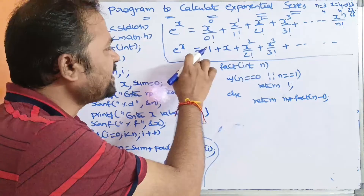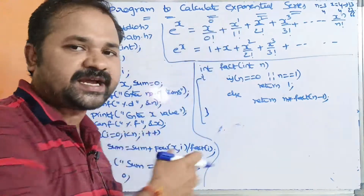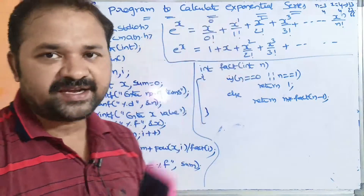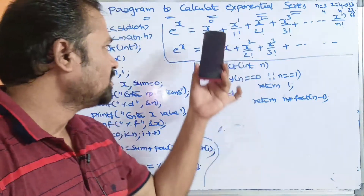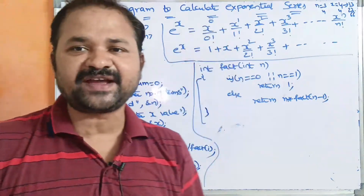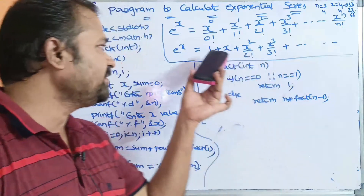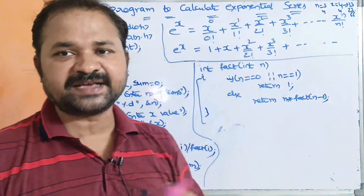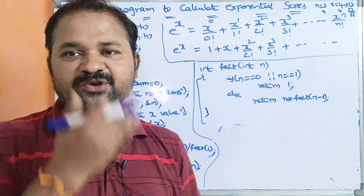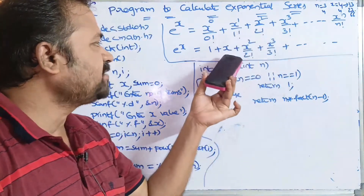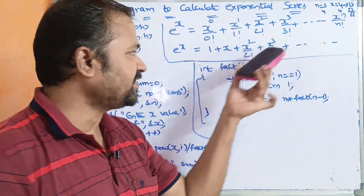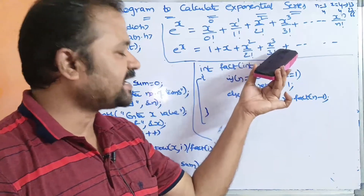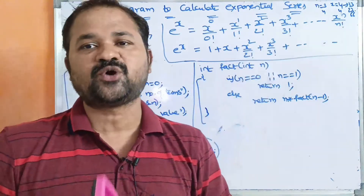So e power x: we know that anything power 0 is equal to 1. So 1 by 0 factorial — what is 0 factorial? It is 1. So 1 by 1 means 1, plus x power 1 can be written as x. So 1 factorial means 1, so x by 1 means x, plus the remaining equation x square by 2 factorial plus x cube by 3 factorial and so on.